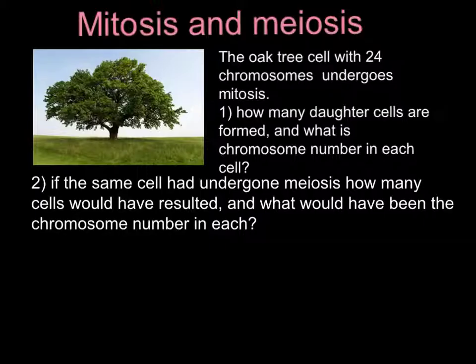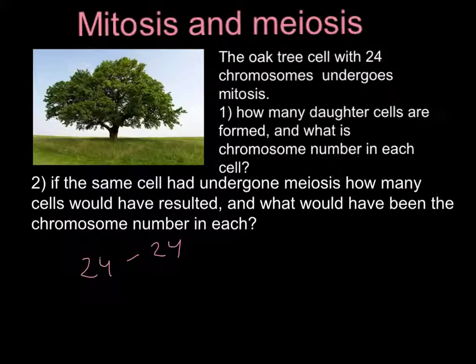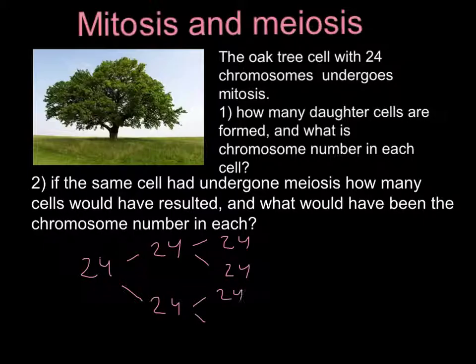If we have 24 chromosomes, then during the process of mitosis — which is normal development of the organism — one cell produces two cells, and each of those cells will produce two more cells. That means that if we start with 24 chromosomes, we have to end with 24 chromosomes in each new cell. There is no doubling or halving of the numbers.